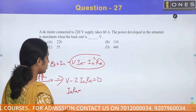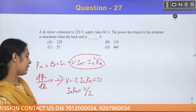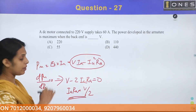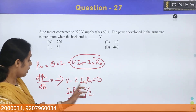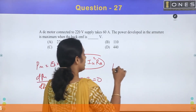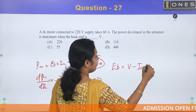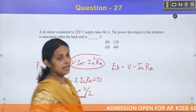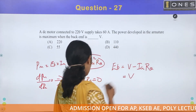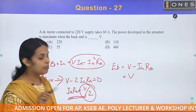This gives armature drop Ia × Ra = V/2. Therefore Eb = V − Ia × Ra, and for maximum mechanical power developed, Ia × Ra = V/2. So back EMF Eb = V/2.